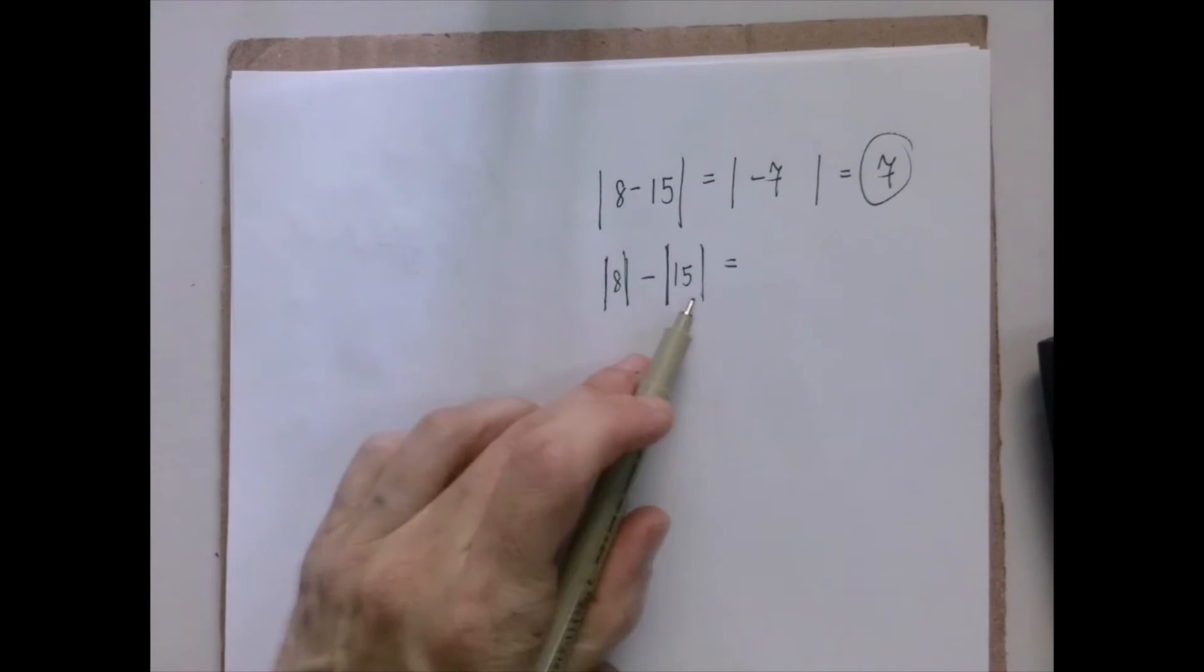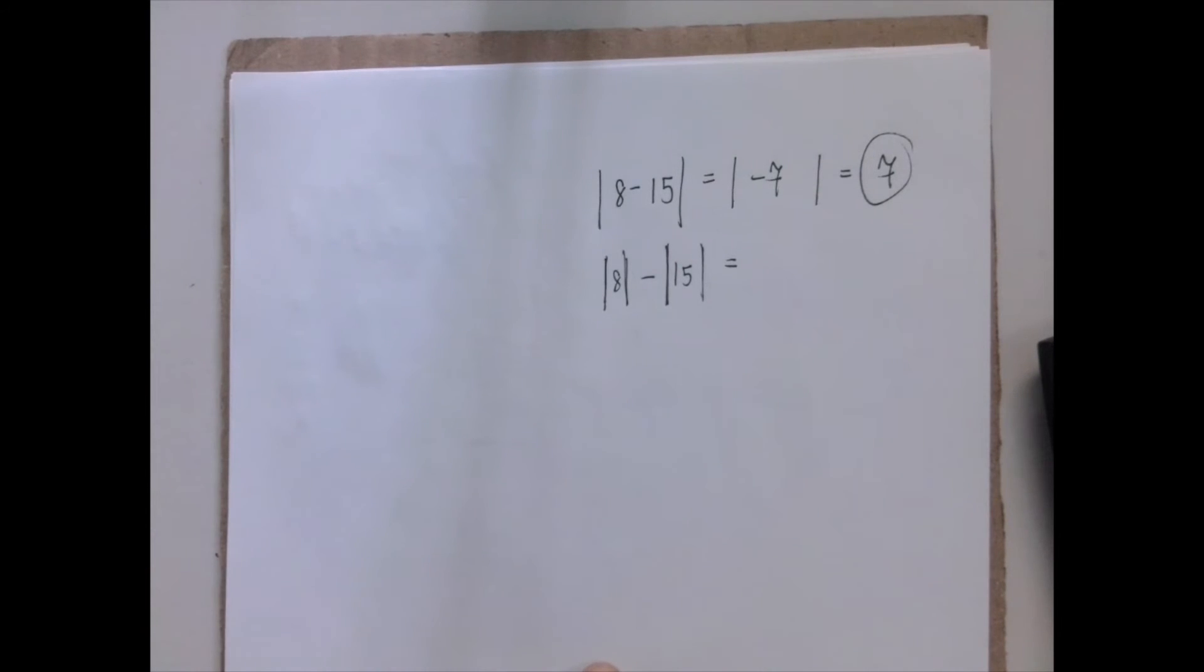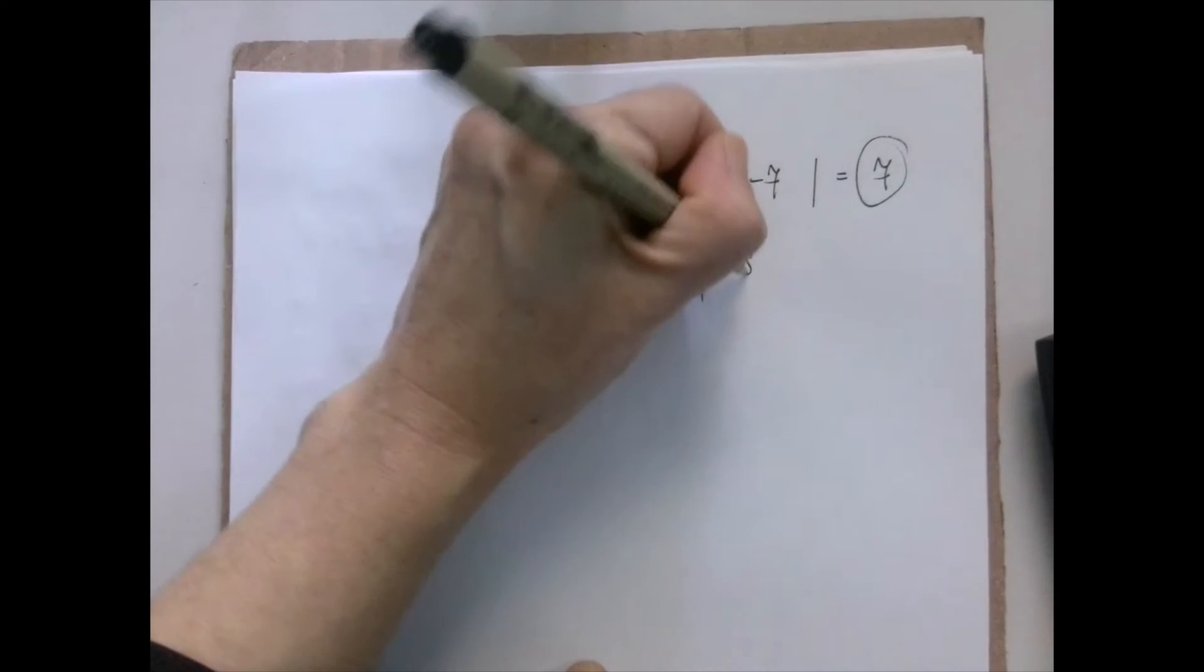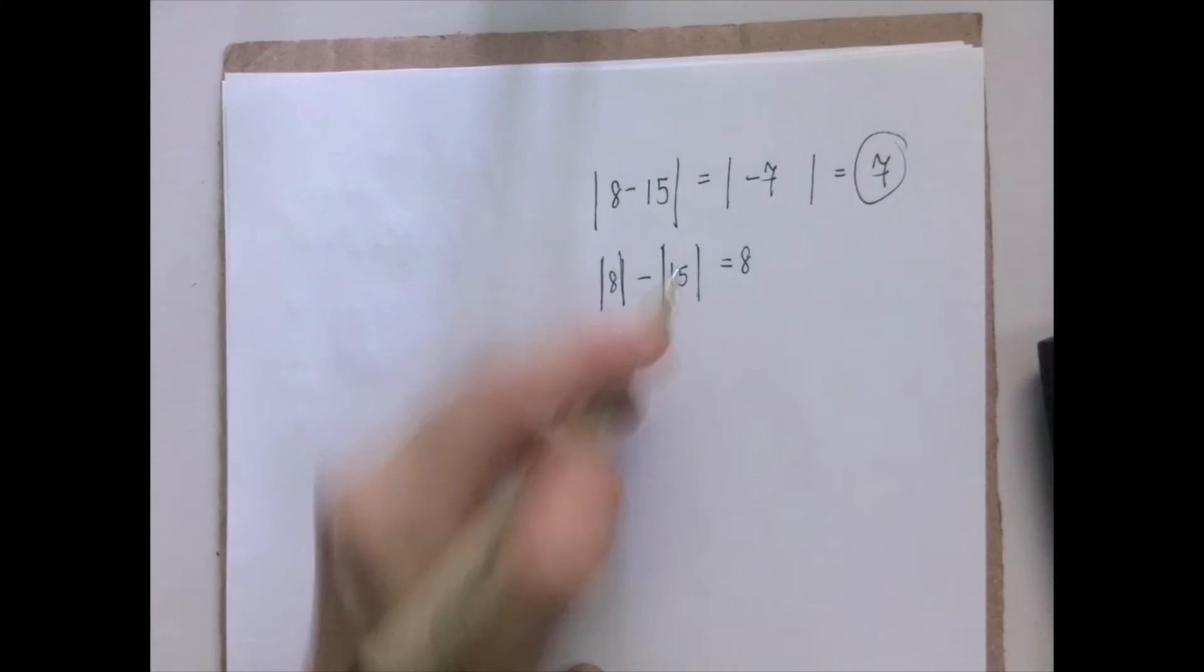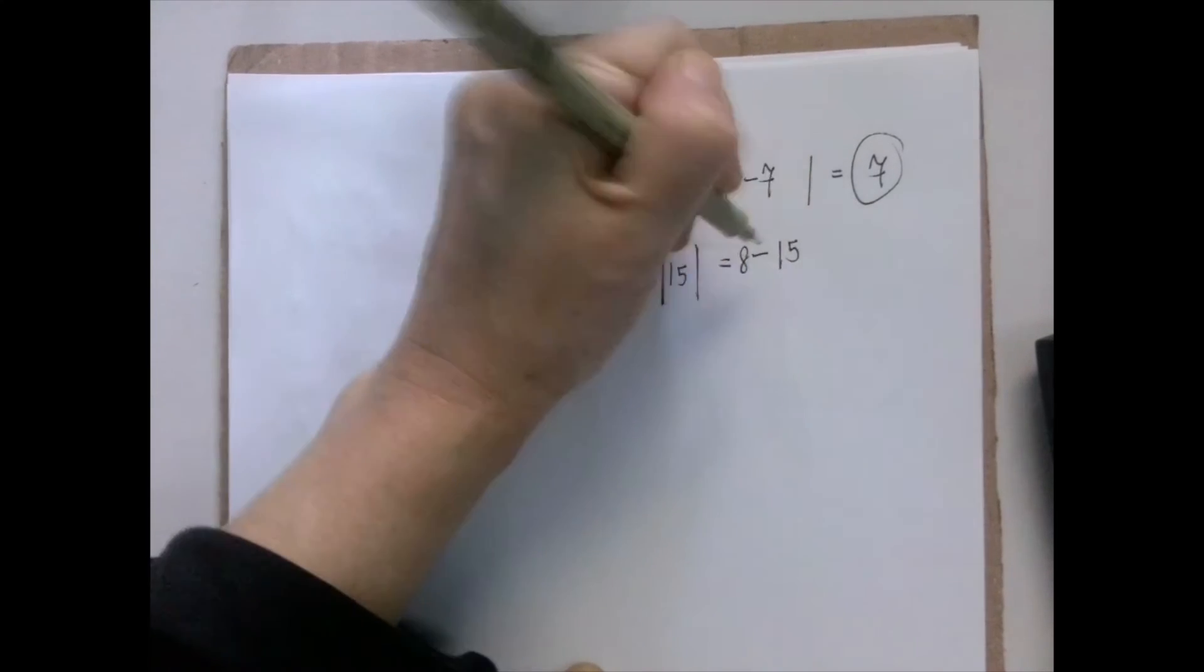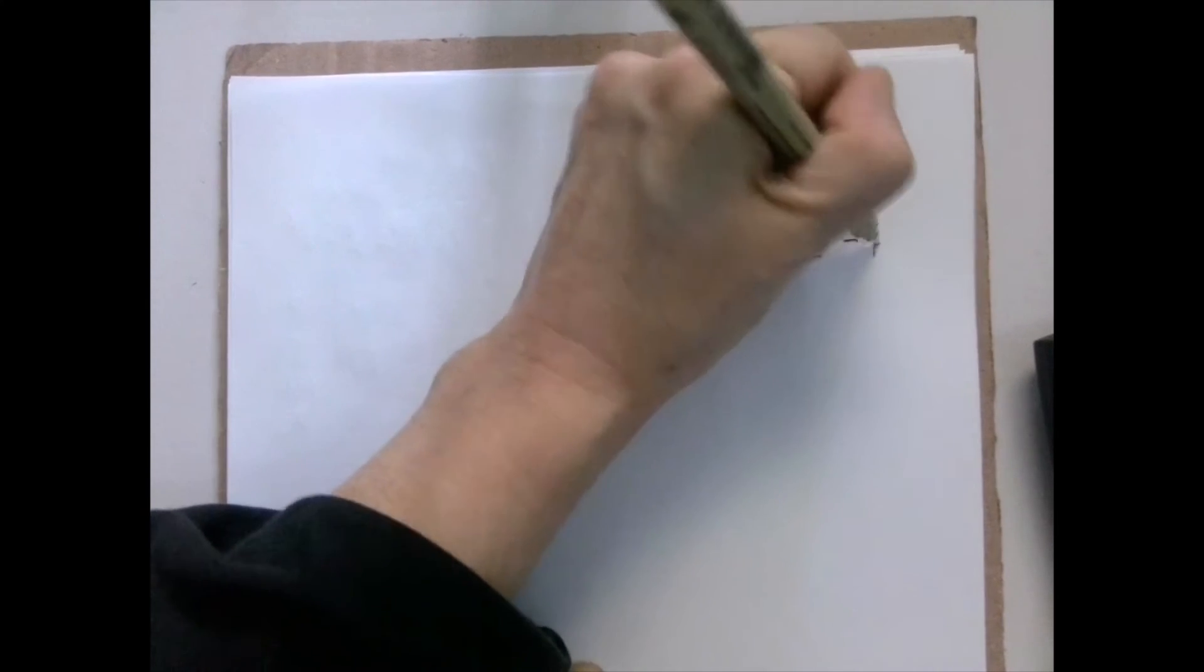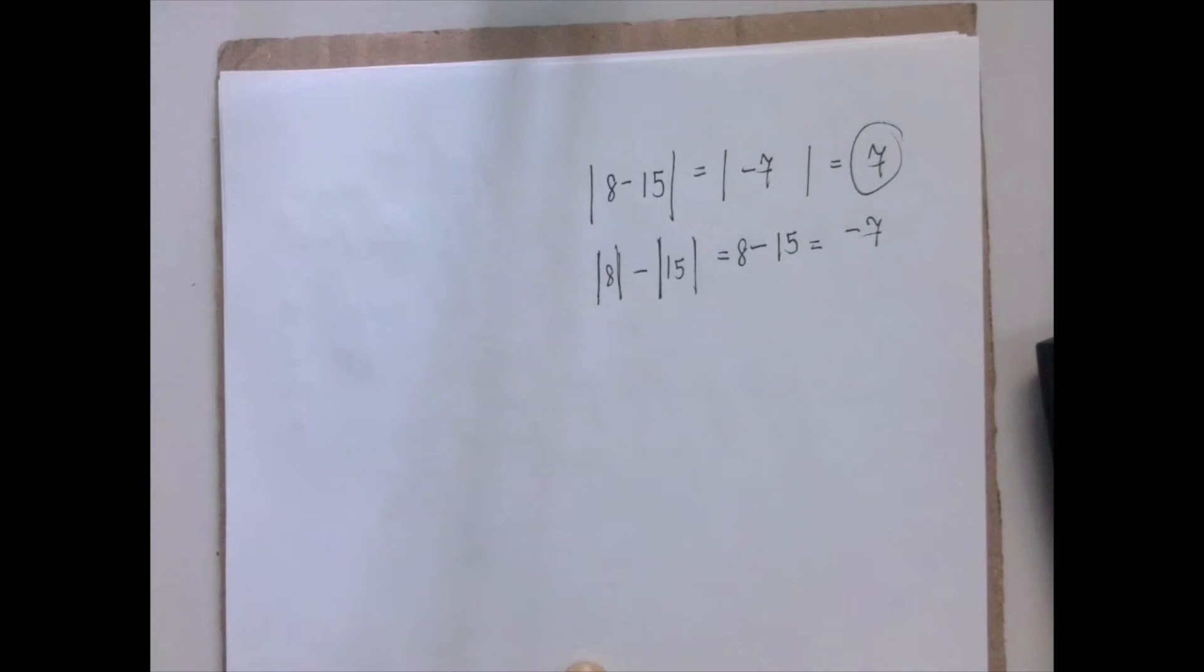And here we have to take the absolute values first and then subtract. The absolute value of 8 is 8. The absolute value of 15 is 15, but we are still subtracting it. And then 8 minus 15 is negative 7.